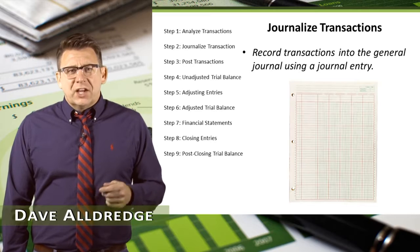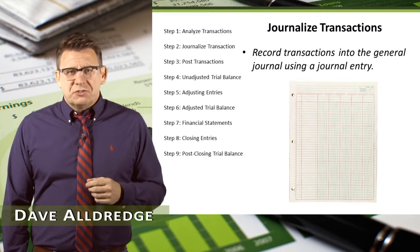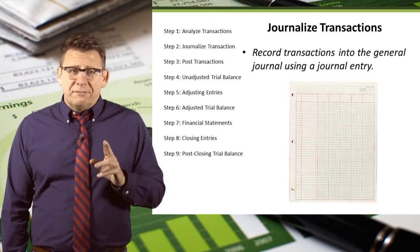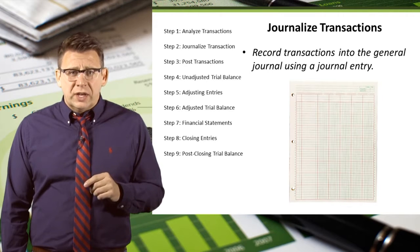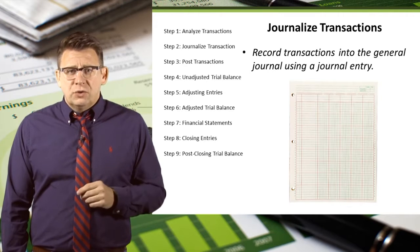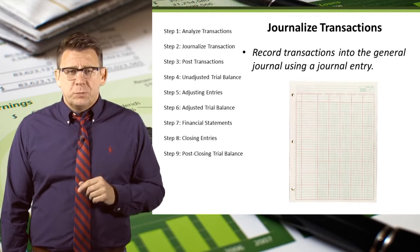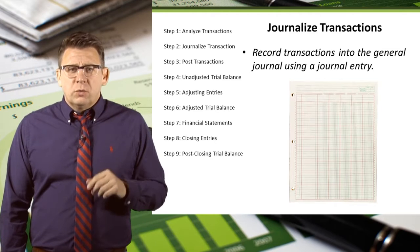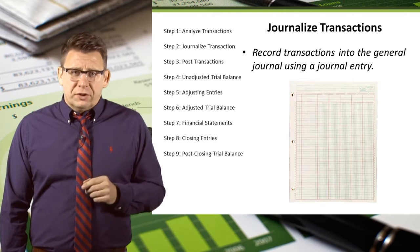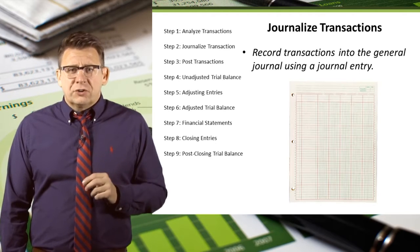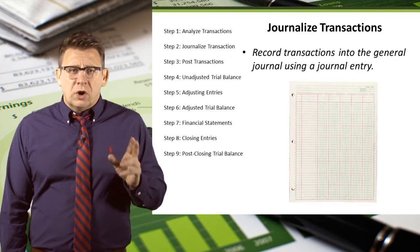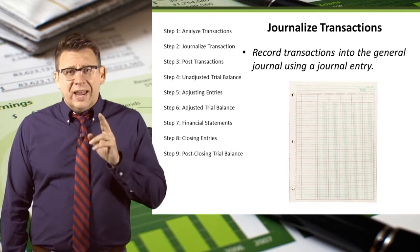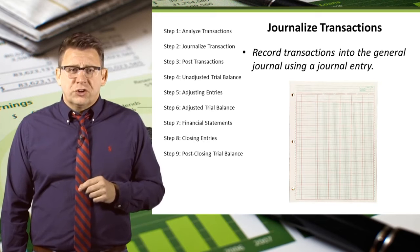Step 2 in the accounting cycle is journalizing transactions. This is the process whereby financial transactions are recorded into the accounting records of a company. Transactions are recorded with a journal entry. These journal entries become the chronological list of all the transactions, and that list is known as the general journal.